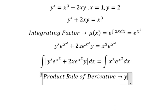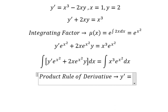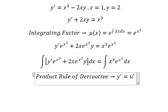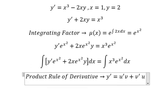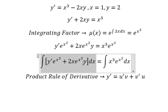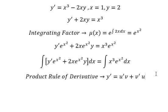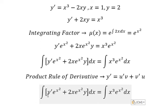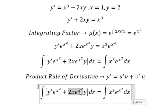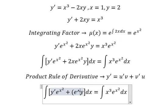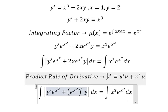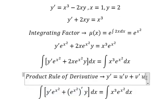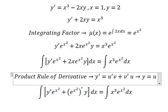So we apply the product rule of the derivative. The first derivative of y equals the first derivative of u multiplied by v, plus u multiplied by the first derivative of v. In this situation, this term is the first derivative of u multiplied by v, and this one is u multiplied by the first derivative of v. So if we do this integration, we have y equals u times v.